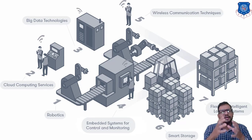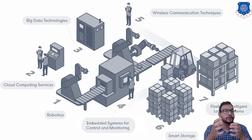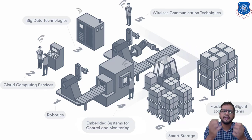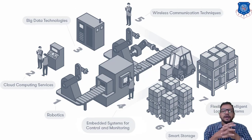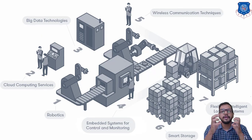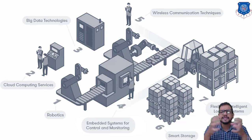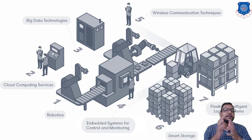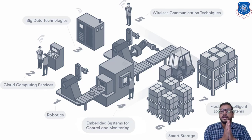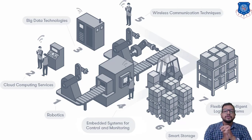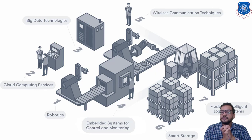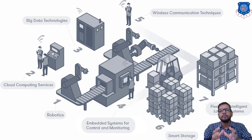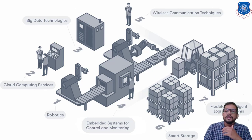Big data technologies involve high velocity, high volume, and high variety of information or data, requiring innovative forms of information processing for enhanced understanding and decision making. Embedded systems consist of actuators and sensors connected together with a microprocessor chip installed — forming a system used for controlling and monitoring. Smart storage and the flexible intelligent logistic system use the internet to indicate where to keep goods at a particular available location. Together, all these components form a cyber-physical system connecting the physical world to the cyber world.